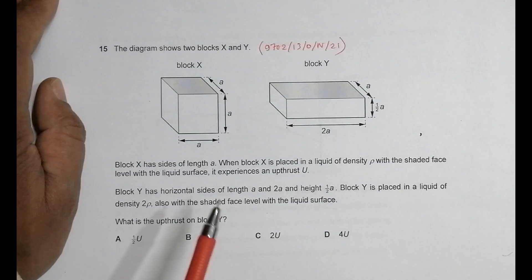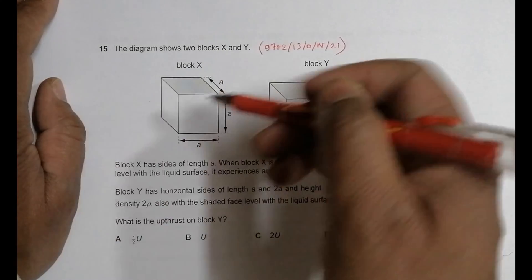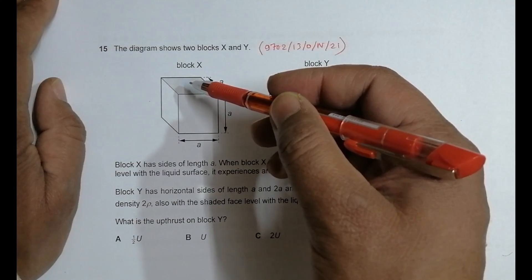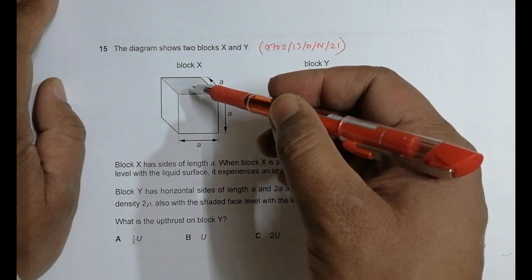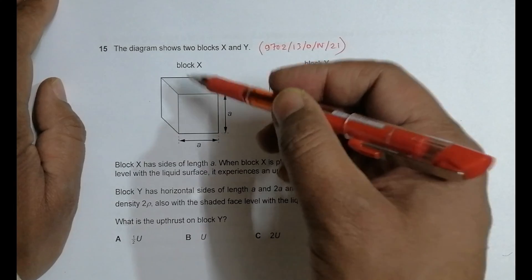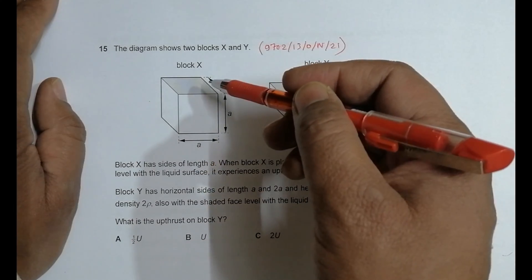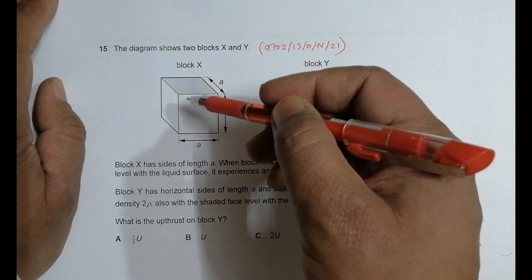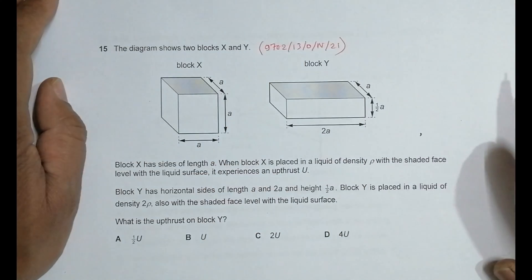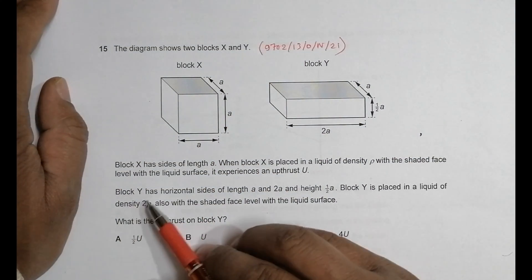It has completely immersed, which means it can displace an amount of liquid equal to its volume. In the next case, we have block Y, which has